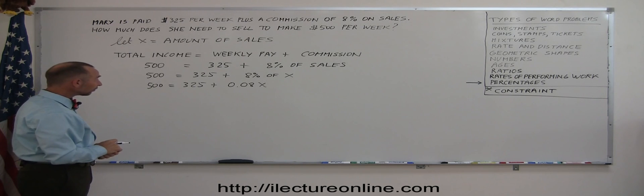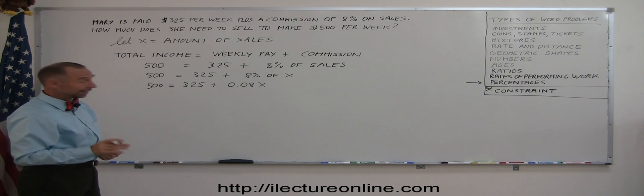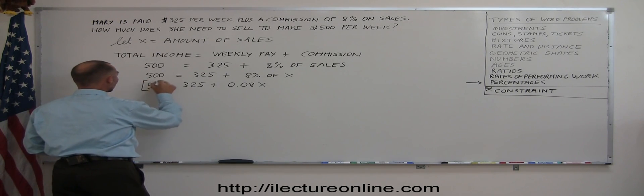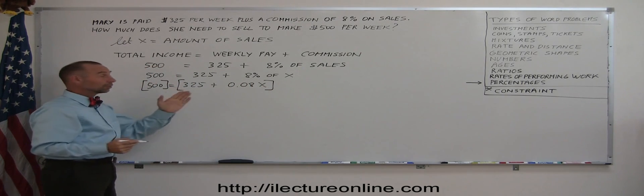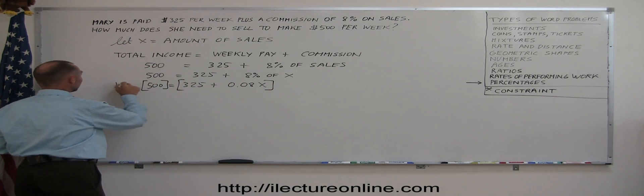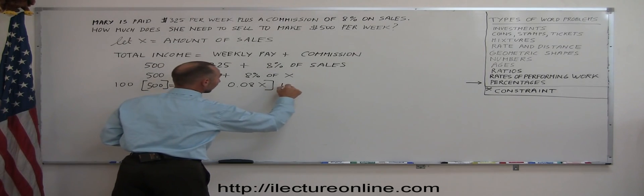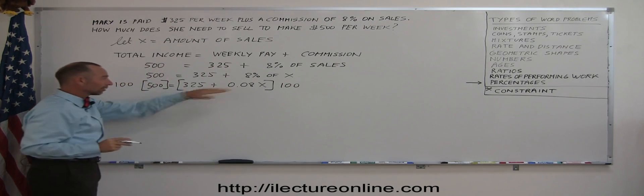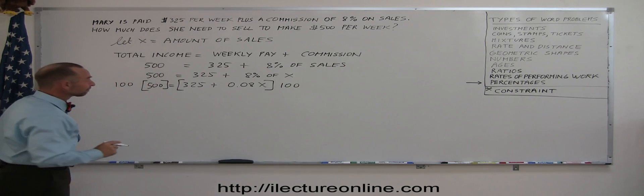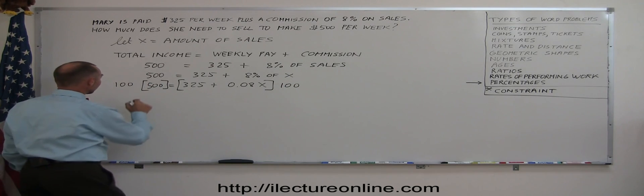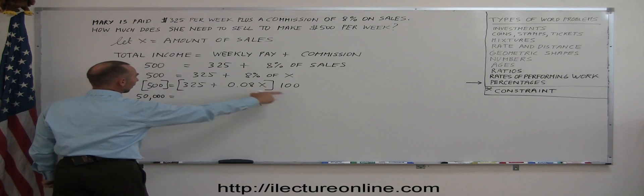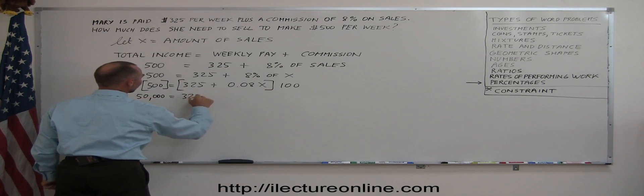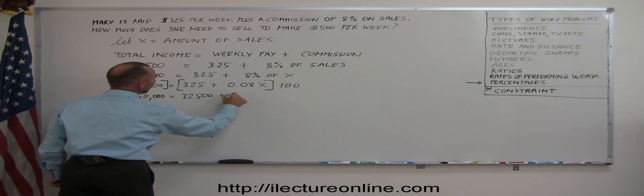Now we're ready to solve for X. The first thing we want to do is get rid of the decimal place. Since there are two decimal places that means we want to multiply both sides by 100. So the left side times 100, the right side times 100, that should get rid of the 0.08. 500 times 100 is 50,000 equals 100 times this is 32,500 plus 8X.